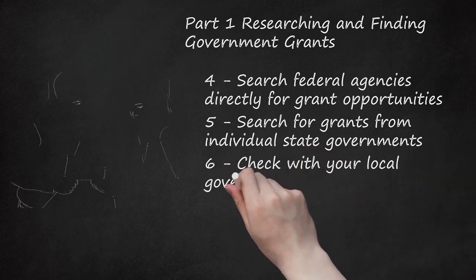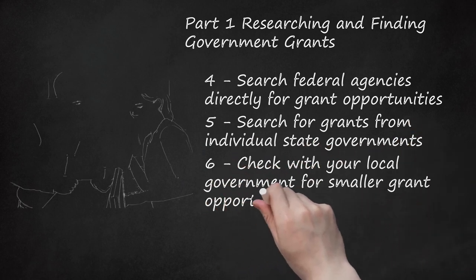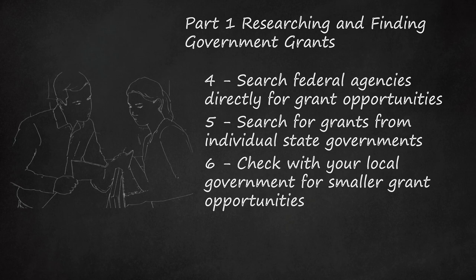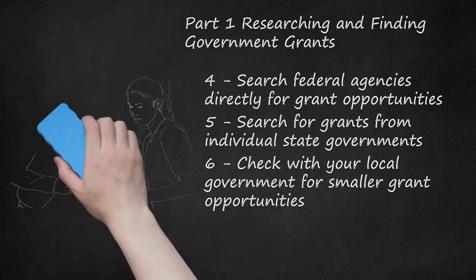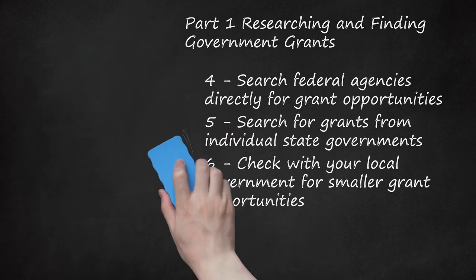Step 6: Check with your local government for smaller grant opportunities. Some cities or towns make money available for a variety of civic projects. These are likely to occur less frequently in smaller towns, but it is still worth looking. Run a search for the name of your city and the word "grants" to find available grants or the local government office that helps coordinate grants. For example, a search for Baltimore grants leads to the Baltimore City Foundation, an organization that makes grants to non-profit organizations within the city of Baltimore to improve the lives of underprivileged youth and families.